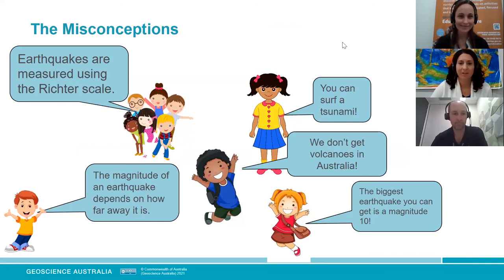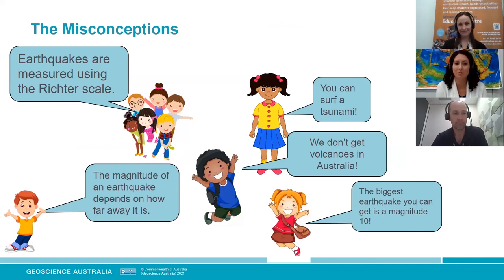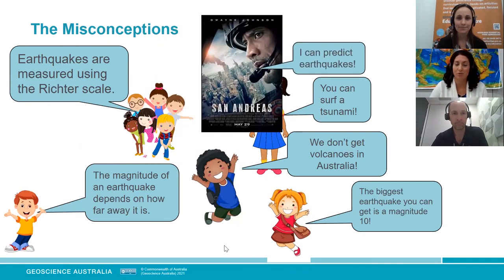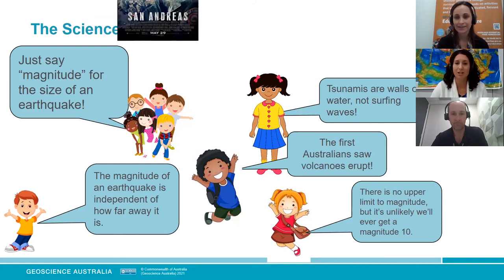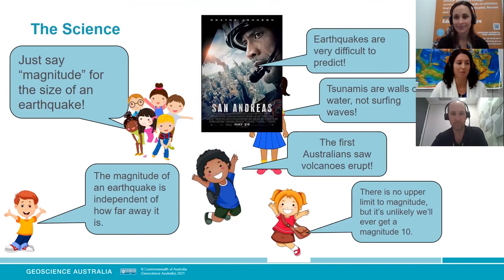To summarise the misconceptions we've addressed: earthquakes are measured using the Richter scale; the magnitude of an earthquake depends on how far away it is; you can surf a tsunami; we don't get volcanoes in Australia; the biggest earthquake you can get is a magnitude 10; and earthquakes can be predicted. Science says: just say 'magnitude' not 'Richter'; magnitude is independent of distance; tsunamis are walls of water, not surfing waves; the first Australians saw volcanoes erupt; there is no upper limit to magnitude but it's unlikely we'll ever get a magnitude 10; and earthquakes are very difficult to predict.